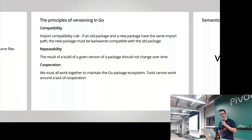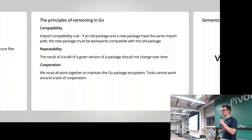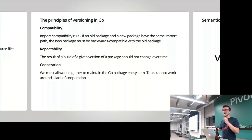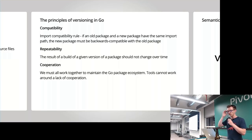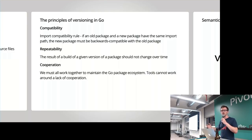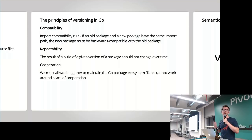Repeatability: the build of a given version of a package should not change over time. That feels intuitively like a very desirable property — you don't want just some passage of time to pass, repeat a build, and get something different. The third principle is cooperation: we all need to work together on this compatibility problem and managing the Go package ecosystem, which is part of the idea behind modules — to make that easier.